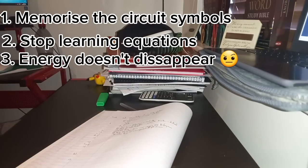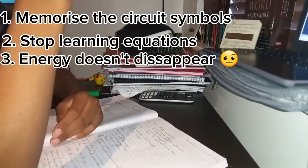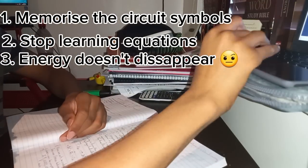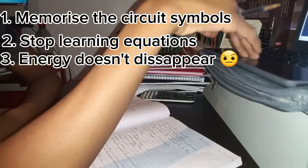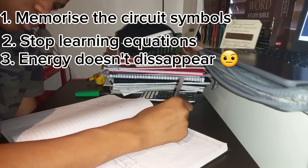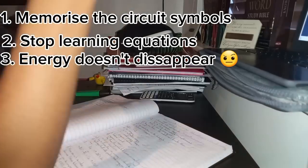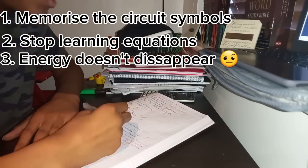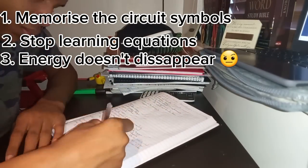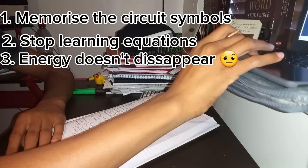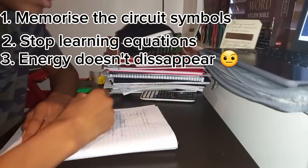Often in GCSE physics, the same amount of energy will be transferred into something else, but if they do ask you why that can't happen, it's obviously because not everything is a hundred percent efficient. In fact, nothing is a hundred percent efficient, and that might be the answer to some question like what assumption have you made about this energy transfer or something like that.